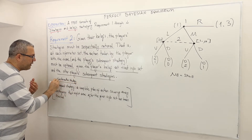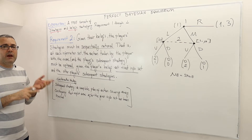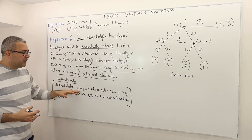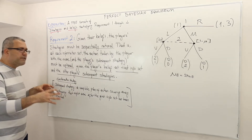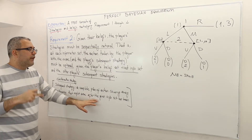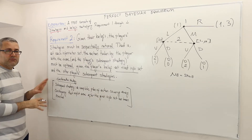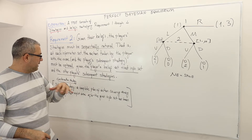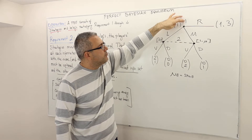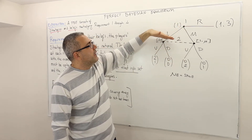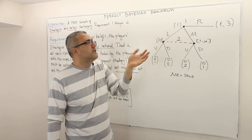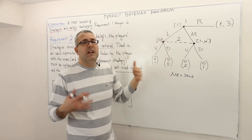We already defined continuation strategy when we talked about subgame perfection, so please go back to those videos. The subsequent strategy or continuation strategy means a complete plan of action covering every contingency, whether those info sets are reached or not, that might arise after the given information set has been reached. In this game, a subsequent strategy following this decision node is basically what player one and player two will do. However, in this game, the subsequent strategy following the information set of player two is just what player two does — that's it, because that's the end of the game.